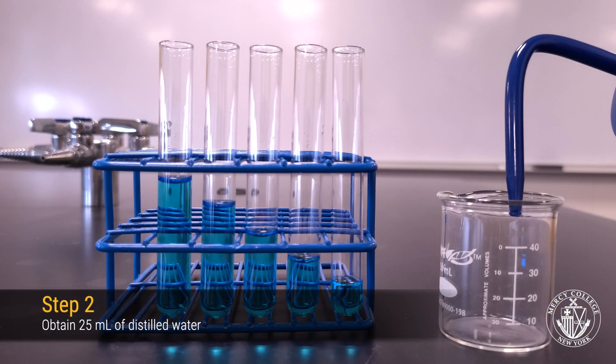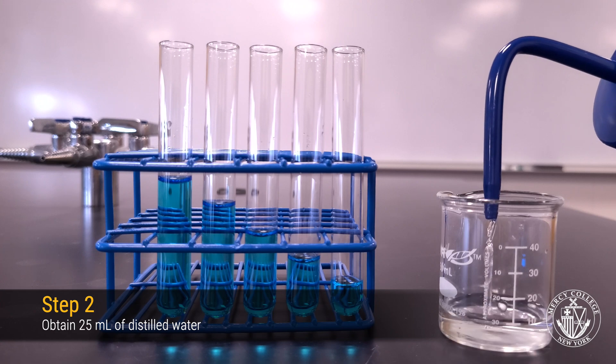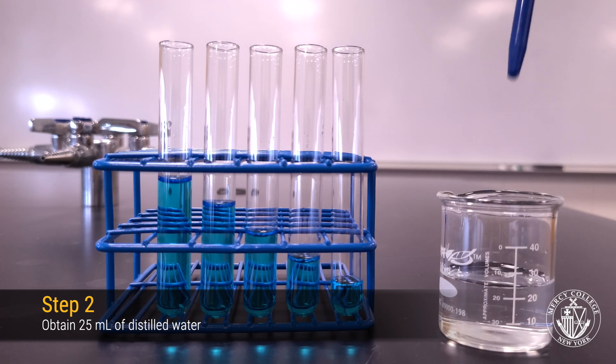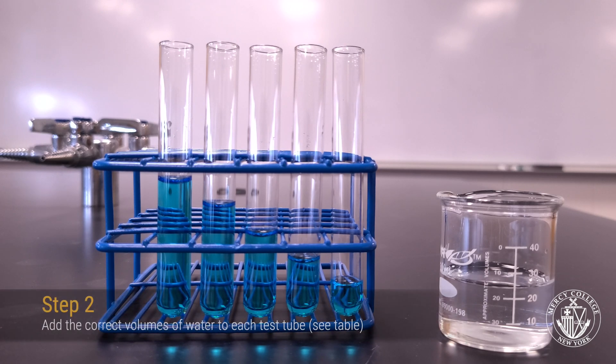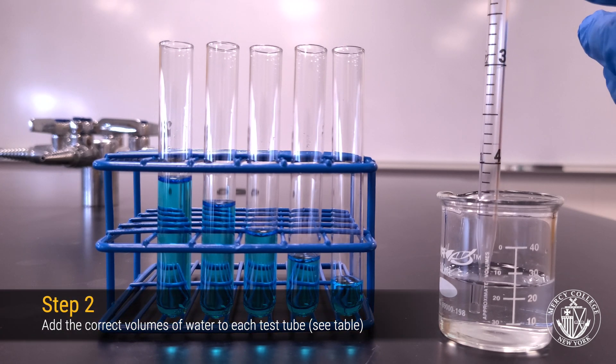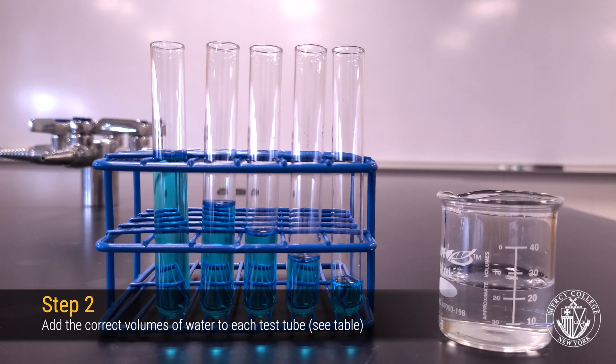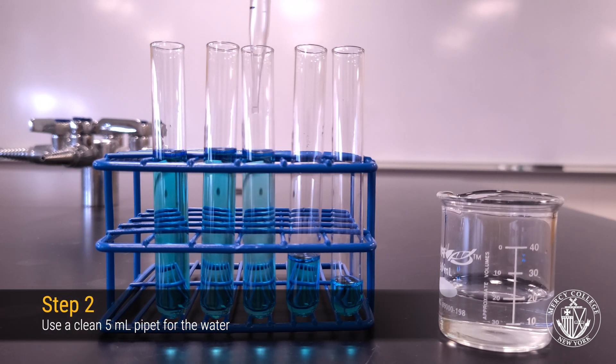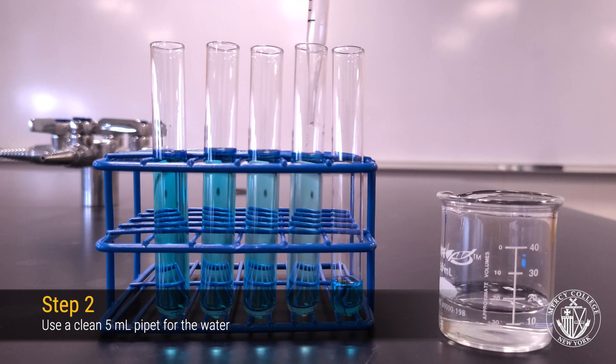For the next part of the experiment, we'll need 25 milliliters of distilled water. Using a clean pipette, transfer 1, 2, 3, 4, and 5 milliliters to your test tubes so that the total volume in each test tube is 6 milliliters.